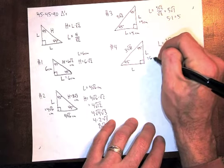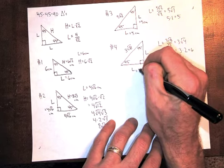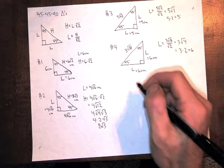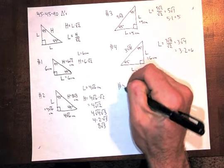So actually these legs are just 6. Just divide it by square root of 2.